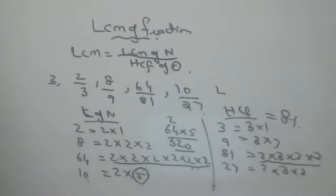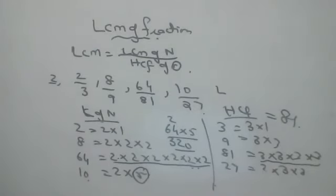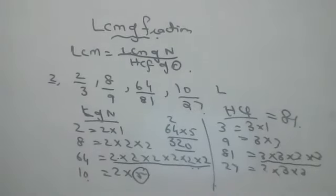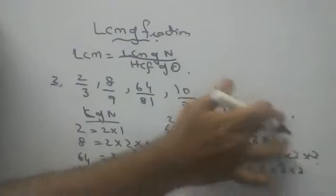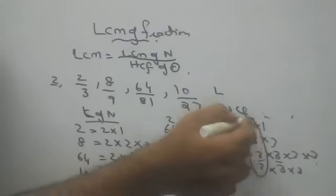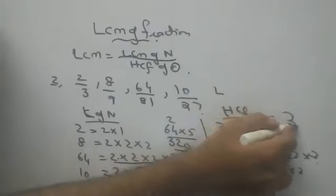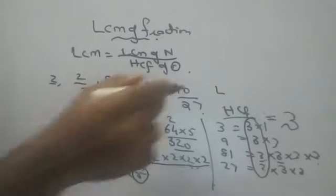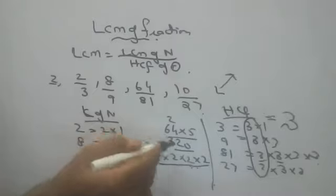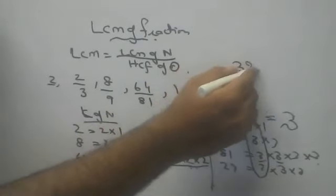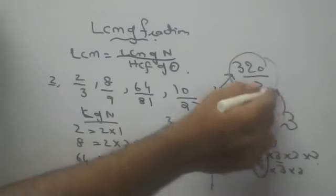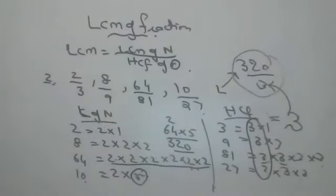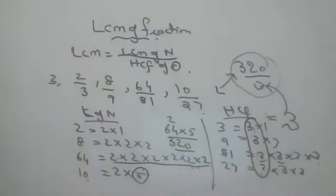For HCF, we should take only one 3. I am really sorry, children. Only one 3 we should take. So, 3 is the HCF. So, what is the LCM of the fraction? LCM of the fraction is 320 by 3. Means, LCM of numerators, HCF of denominator. Only one 3 is common. You should take 3 in the HCF. That's all.